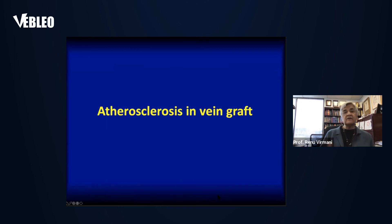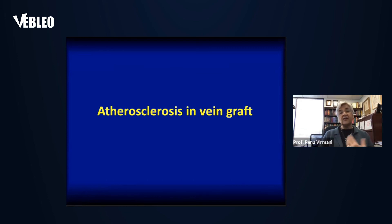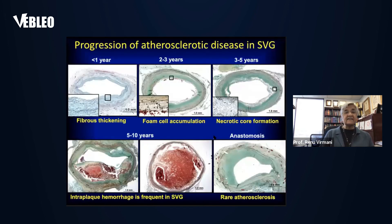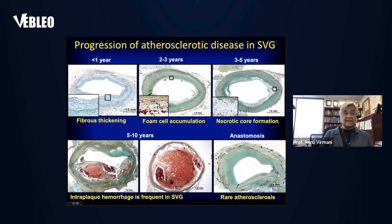Regarding thrombosis in vein grafts: we have been treating coronary disease with bypass surgery, but unfortunately vein grafts are not immune from atherosclerosis. In fact, they develop atherosclerosis more rapidly than in native arteries. Progression in vein grafts is shown at less than one year, two to three years, and three to five years — showing foamy macrophages, necrotic core formation, intraplaque hemorrhage, and thrombus within five to ten years. In native arteries it takes 40 to 60 years before disease manifests.